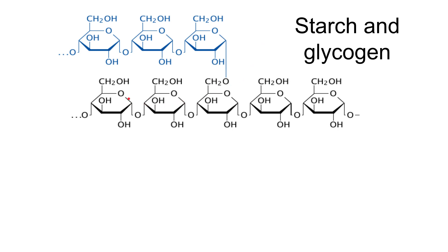More than two monosaccharides bonded together is known as a polysaccharide. When alpha glucose molecules bond via carbon one reacting with carbon four, this is known as a 1-4 linkage, producing a long chain. Extra bonds can also form off the side of the molecule where carbon one reacts with carbon six — this is a 1-6 linkage, which forms a branch off the main chain.